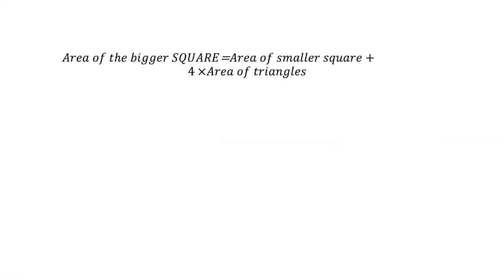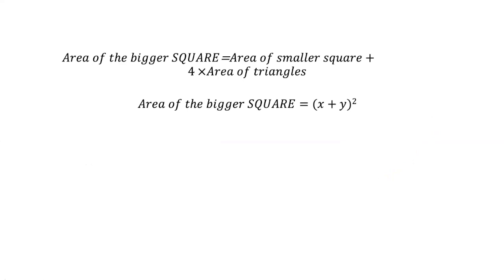So: area of the bigger square = area of the smaller square + four times the area of the triangle. We know the area of the bigger square equals (x + y) squared, because the sides are equal. The same applies to the area of the smaller square.